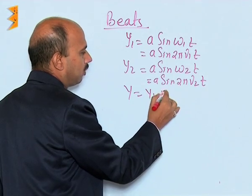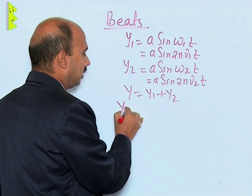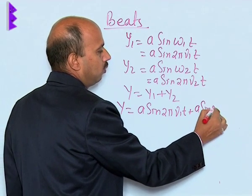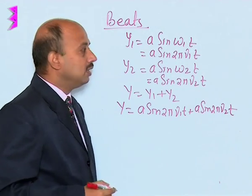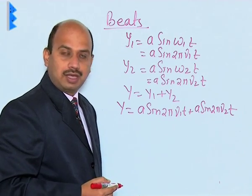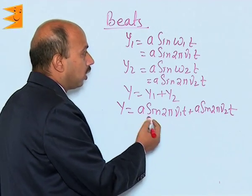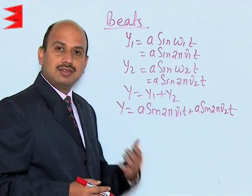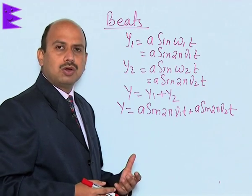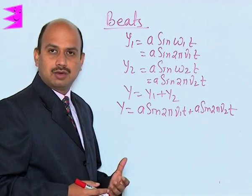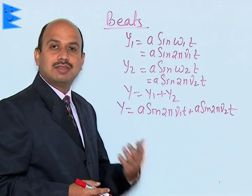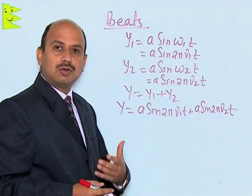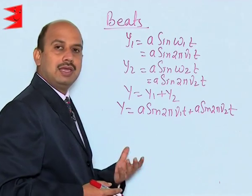We can write y = y1 + y2 according to the principle of superposition, giving a sin(2π ν1 t) + a sin(2π ν2 t). The difference between these frequencies should be less than 10, not more than 10. The difference should be small, because that is based on the persistence of hearing — whenever we hear a sound it remains for 1/10 seconds. So if any sounds come before 1/10 seconds we cannot distinguish between them, and the frequency difference should be less than 10.